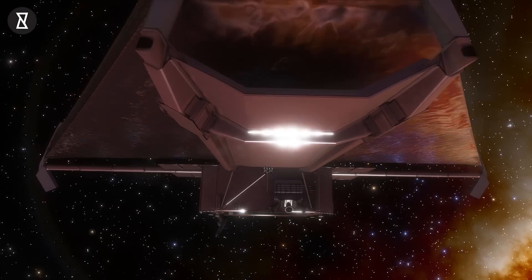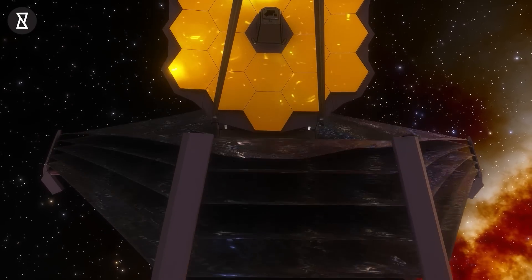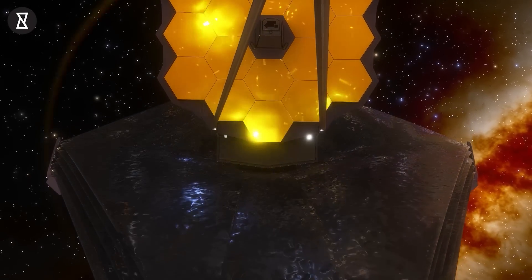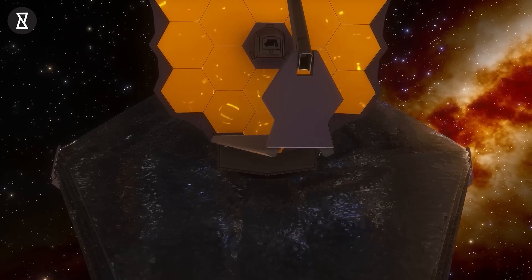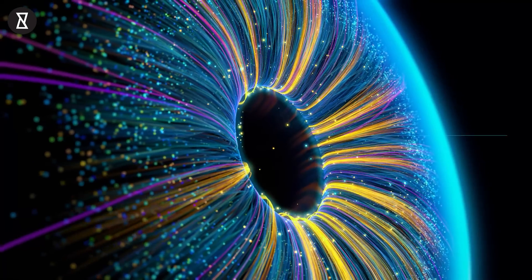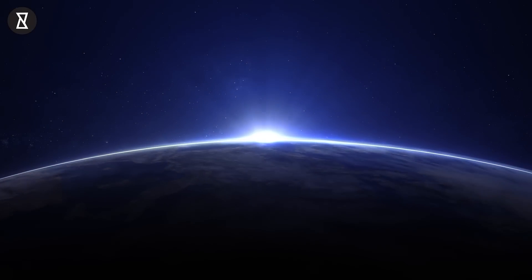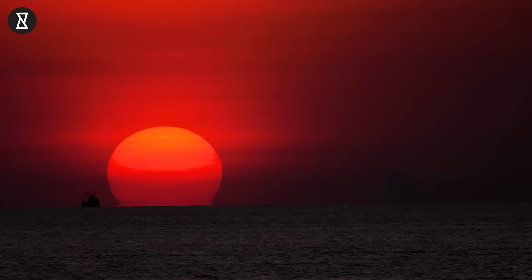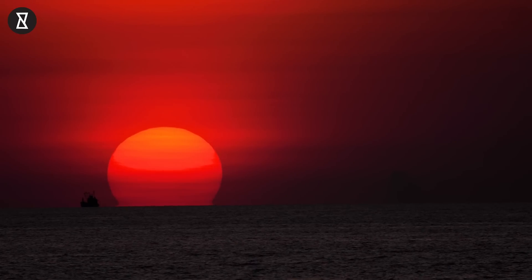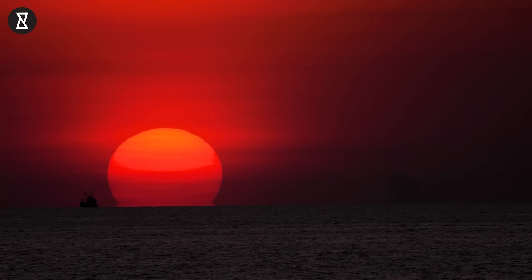Before we proceed with the video, we have received a lot of comments asking how the Webb Telescope is able to see back in time. It is quite simple actually. We do it all the time. Light from the sun takes 8 minutes to travel 150 million kilometers before reaching us, so when you are looking at the sun, you are looking at it as it was 8 minutes ago.